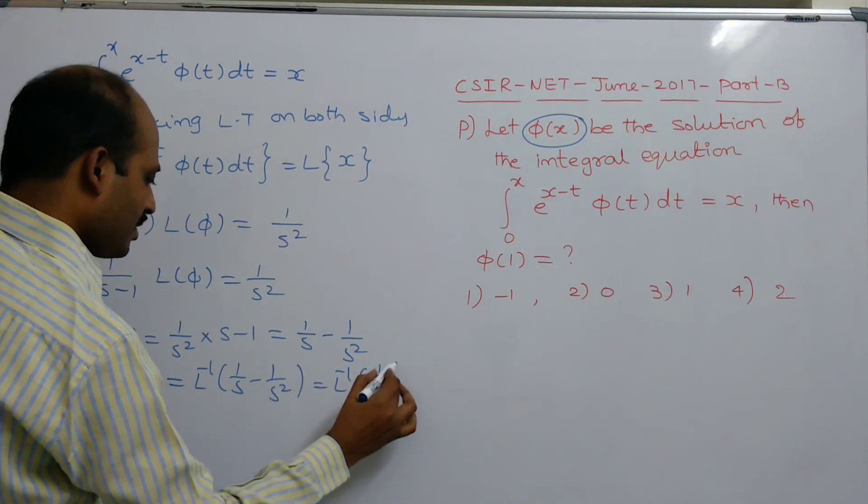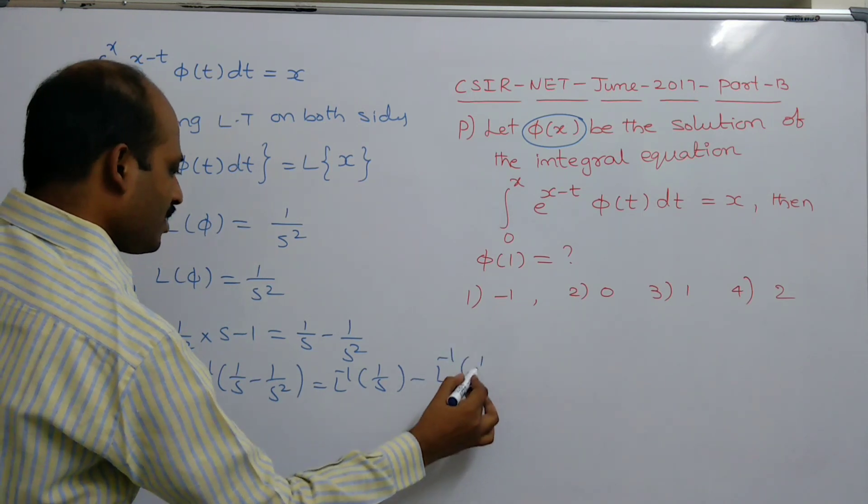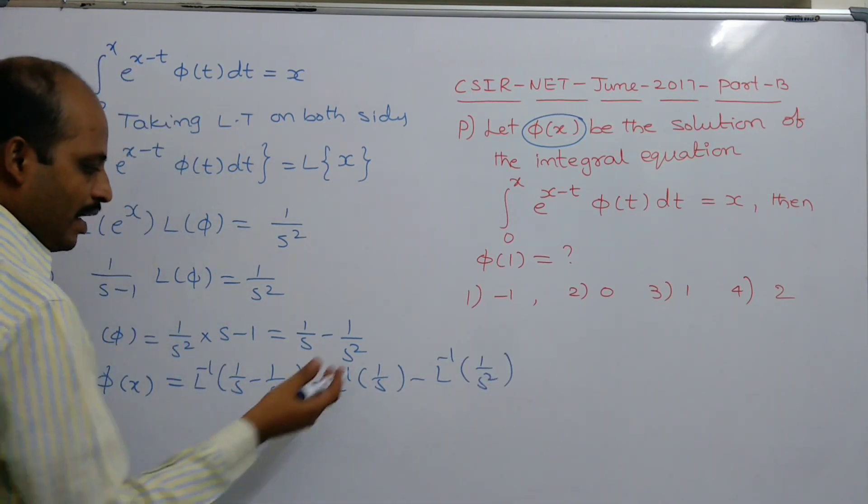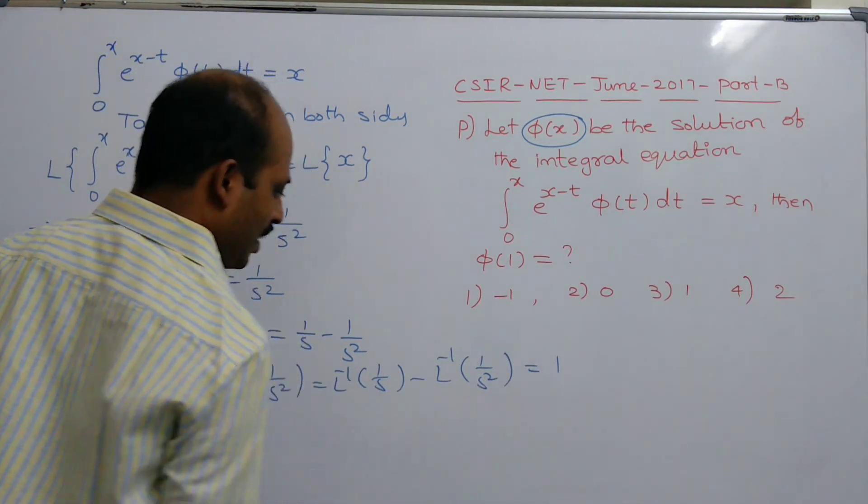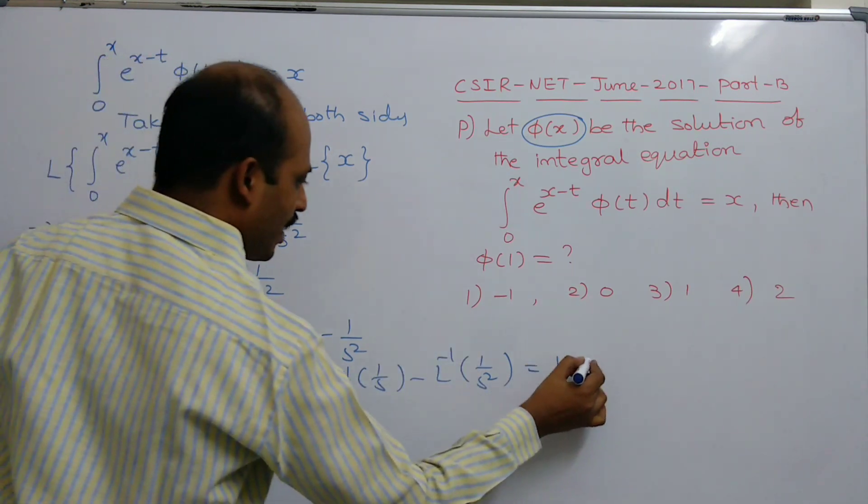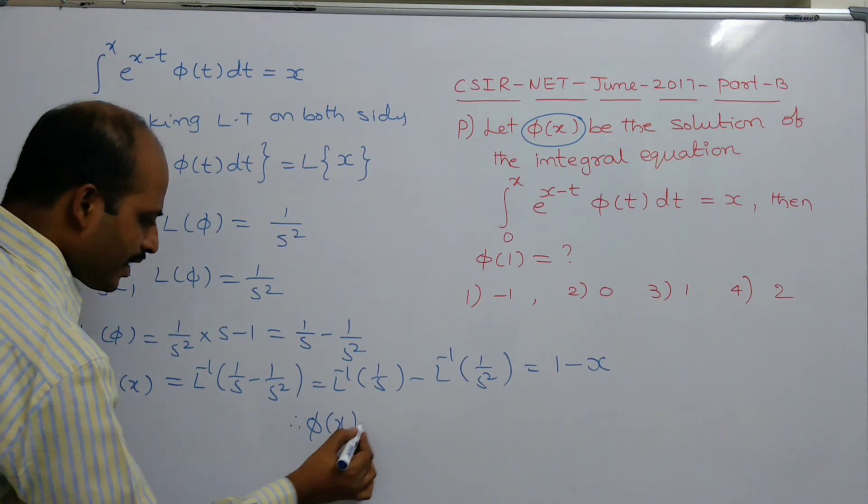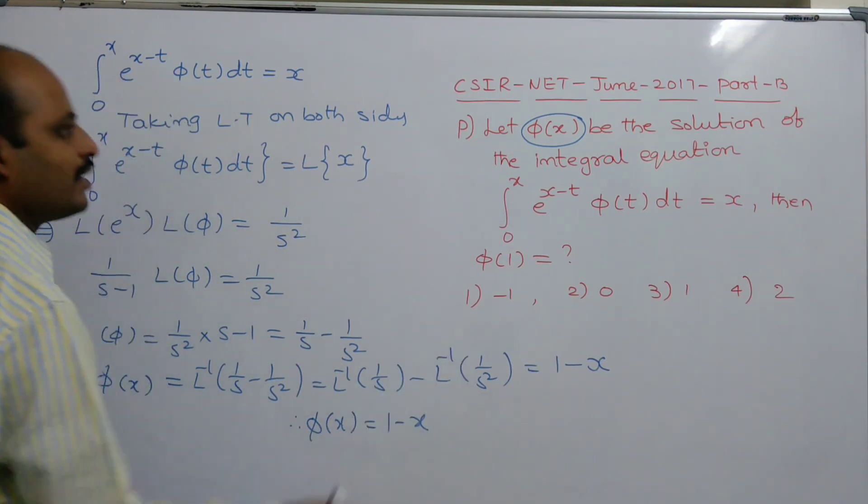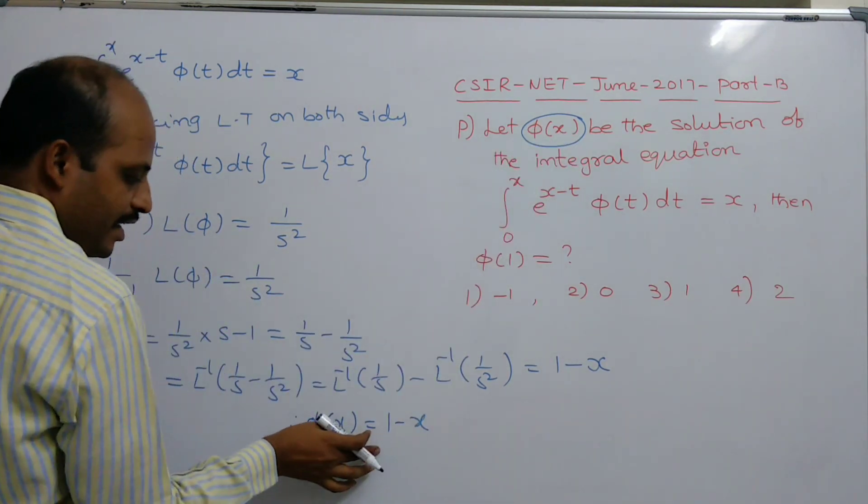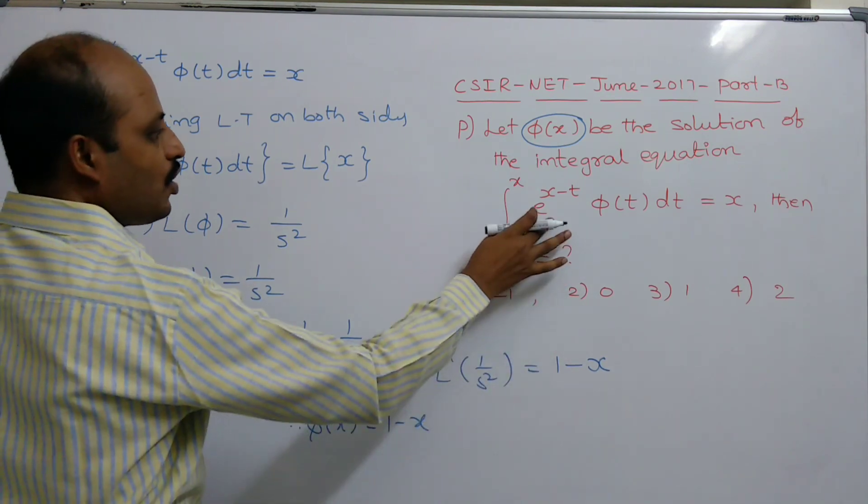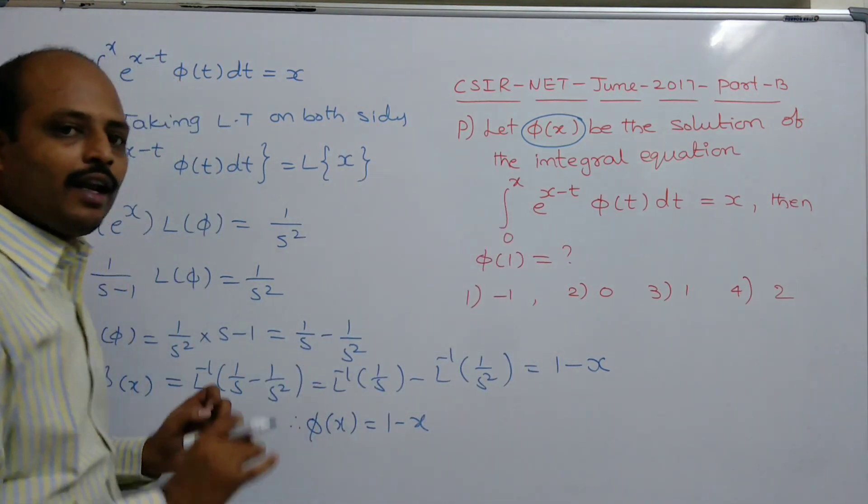L inverse of 1 by s minus L inverse of 1 by s square. L inverse of 1 by s, you get 1. L inverse of 1 by s square, you get x. Therefore, we get φ of x equals 1 minus x. φ of x equals 1 minus x is the solution of given integral equation.